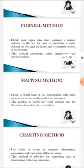The second one is the Cornell method. Divide your paper into three sections: a narrow column on the left for cues or questions, a wider column on the right for notes, and a summary section at the bottom. This method encourages active engagement and summarization.